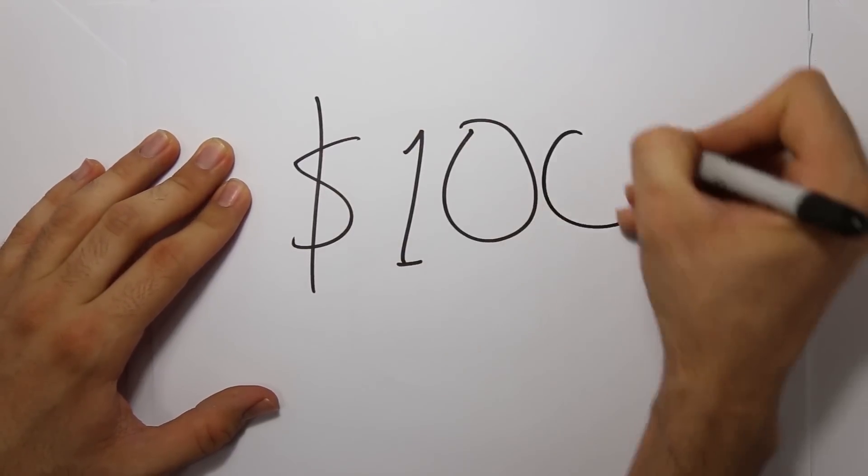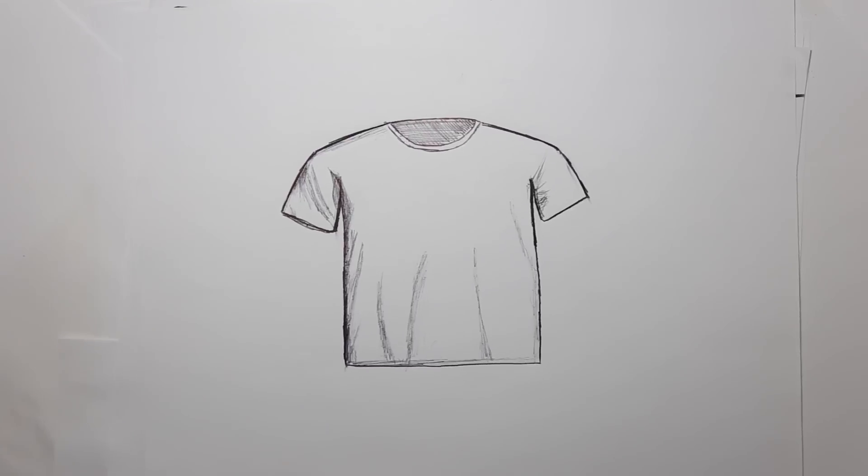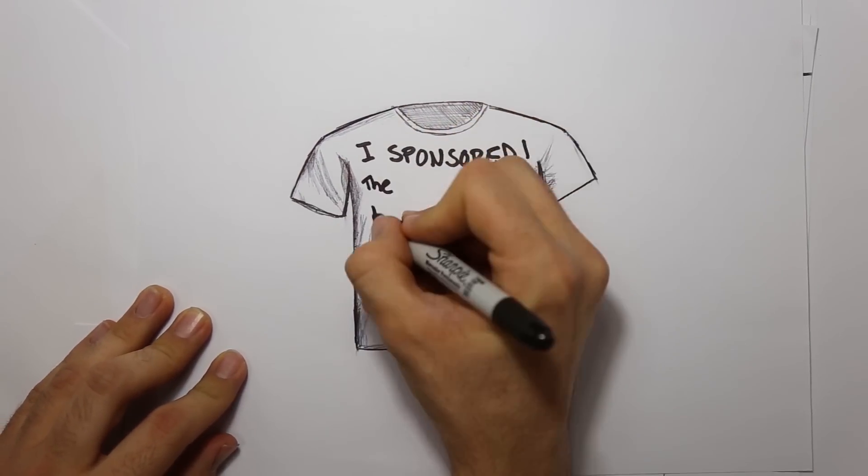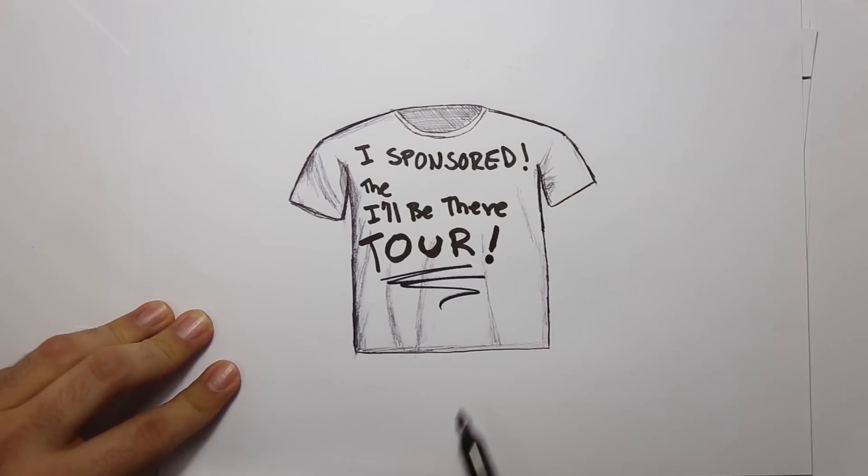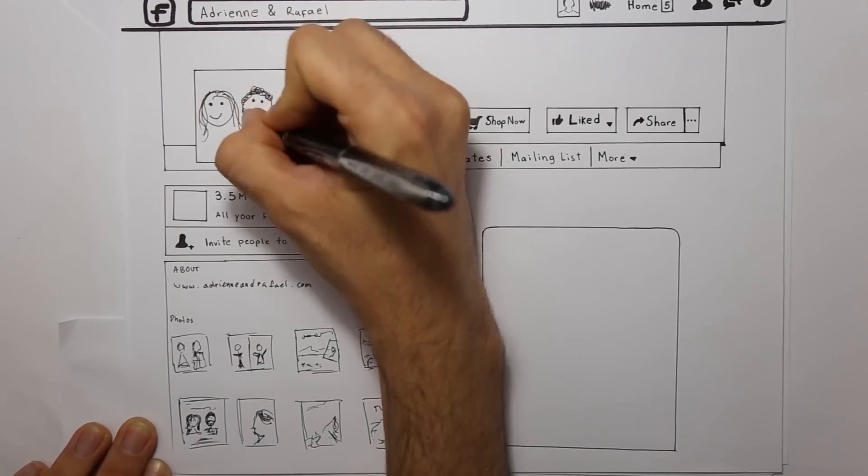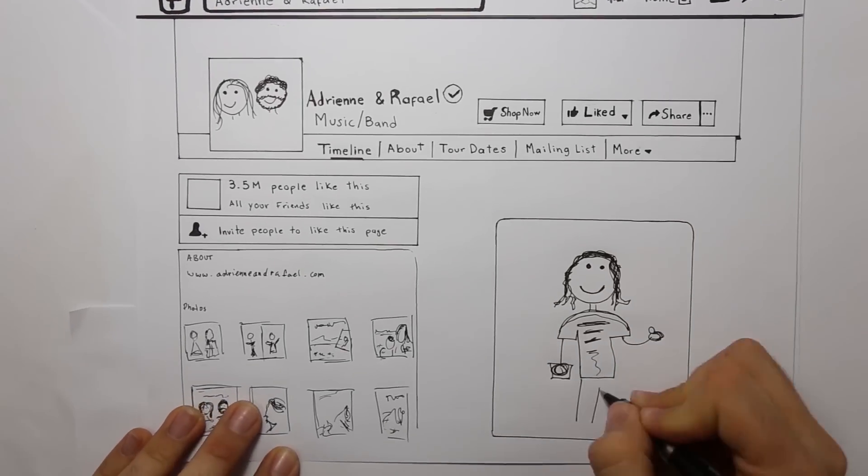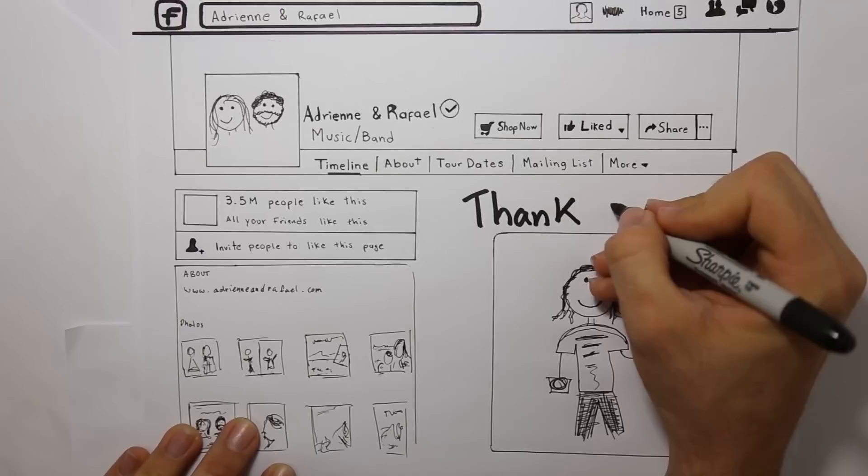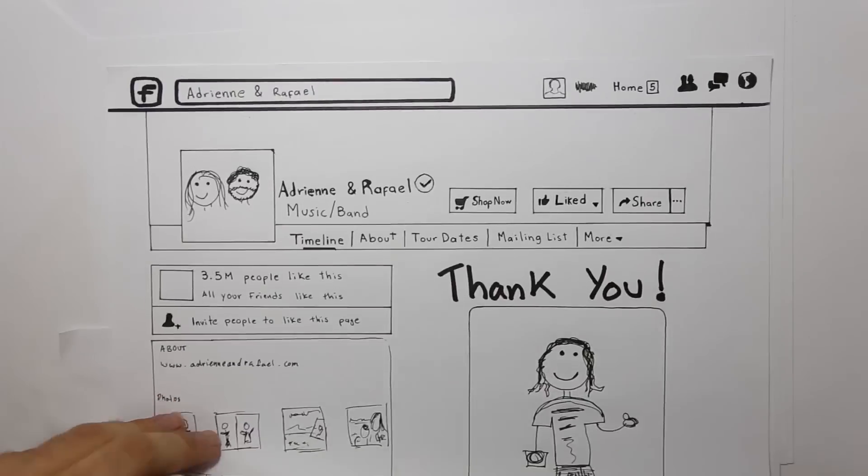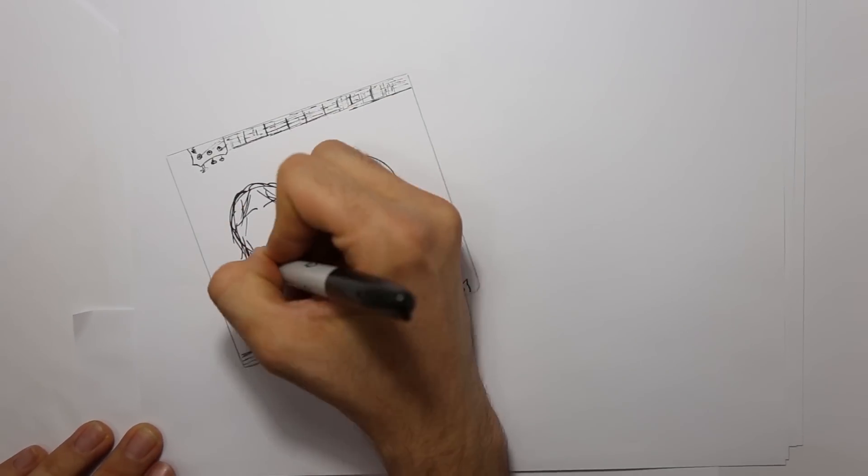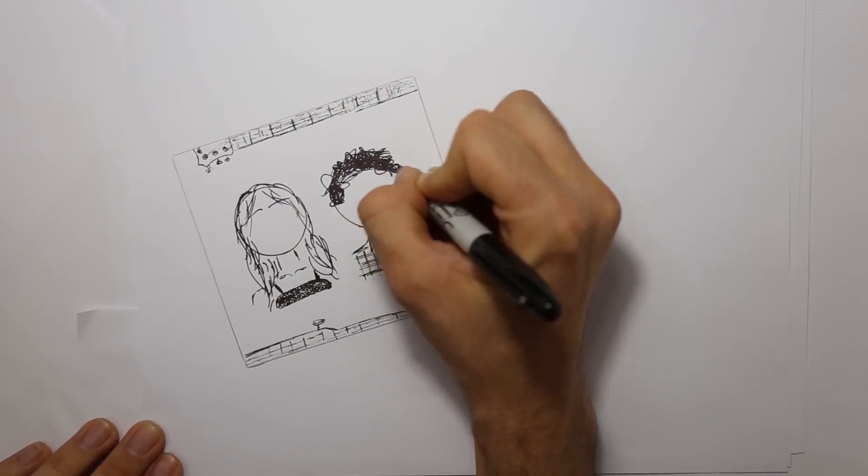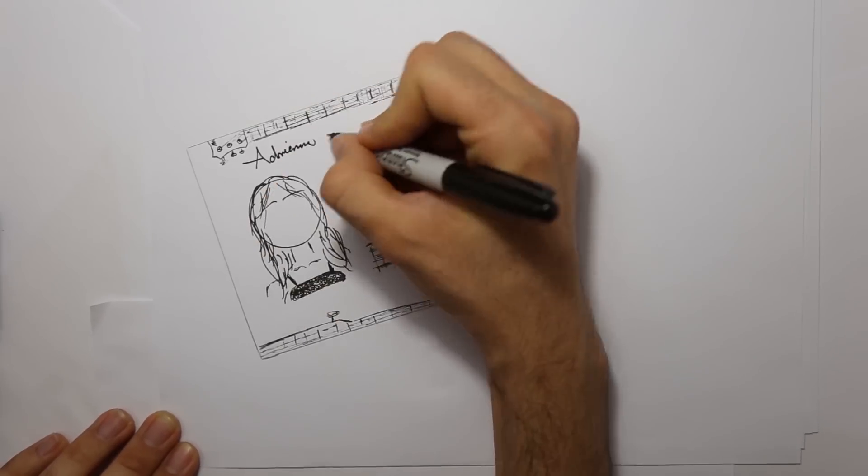But if you decide to donate a hundred bucks or more, you'll get a t-shirt that says I sponsor the I'll be there tour. You can send us a picture of you wearing that shirt, and it will appear on all of our social media. And we'll make sure you get into any of the tour shows for free.